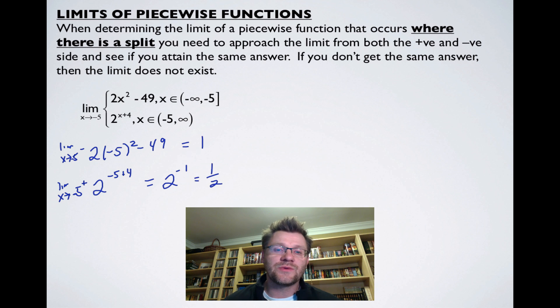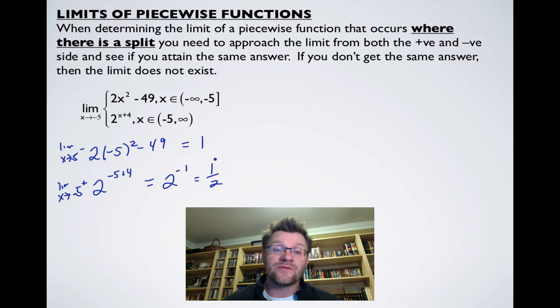Because we get two different values — 1 from the left and one-half from the right — that means the limit does not exist.